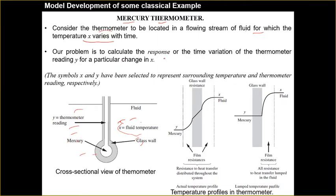Our problem is to calculate the response — the time variation of the thermometer reading y — how y will be read in the bulb as mercury rises. The symbol x represents the surrounding temperature and y represents the thermometer reading. x is for the fluid, y is for the mercury.